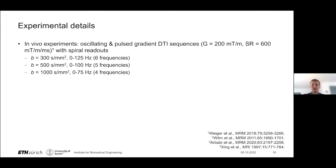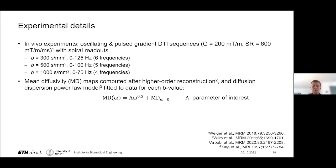We scanned volunteers in vivo using oscillating and pulse gradient DTI sequences with gradient amplitudes up to 200 mT/m and slew rates up to 600 T/m/s, using spiral readouts. We performed multiple-frequency diffusion measurements at three different b-values — 300, 500, and 1000 s/mm² — with maximum frequencies of 125, 100, and 75 Hz respectively. Field monitoring data informed higher-order reconstructions, and we computed mean diffusivity maps to which we fitted the diffusion dispersion power law model to each voxel, separately for each b-value. We selected an exponent of 0.5 and are ultimately interested in the parameter lambda, the diffusion dispersion rate.